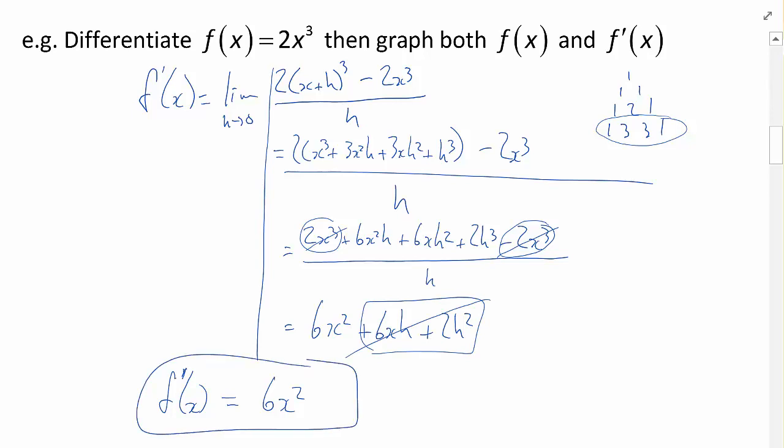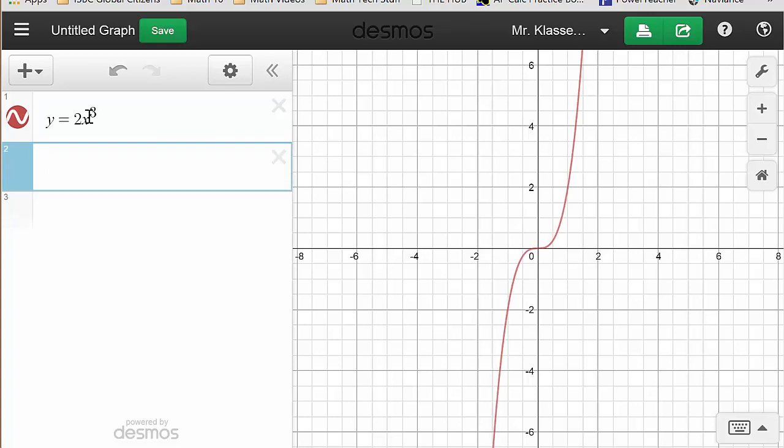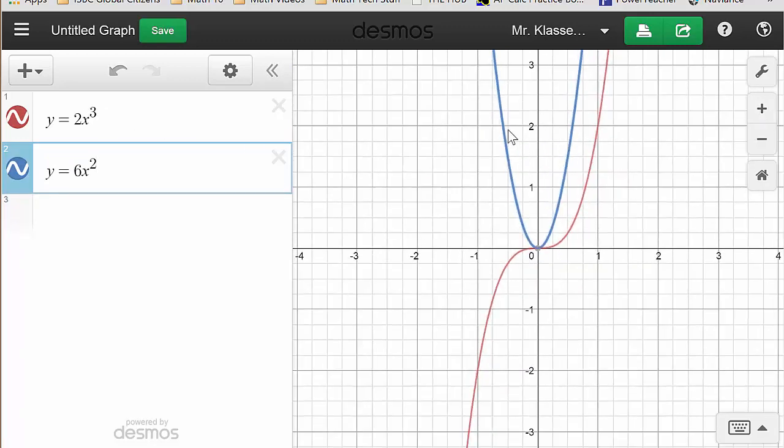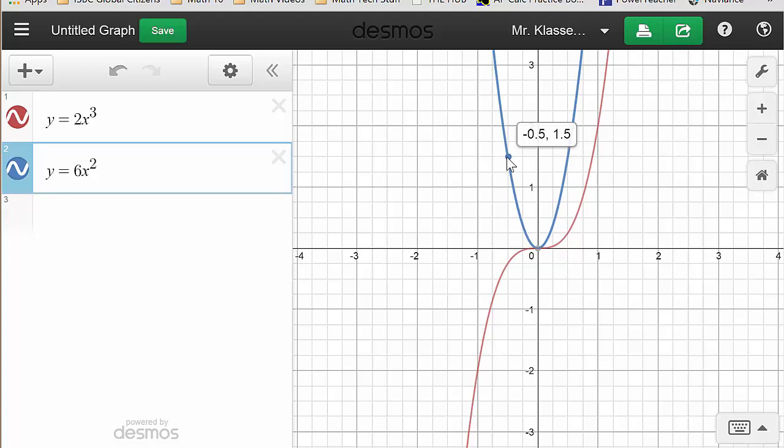Now let's look at graphing both of these. The original function was y equals 2x to the power of 3. There it is. And then the derivative function we said is y equals 6x squared. And what's important to note here with these two functions is that any point on this function here, say negative 0.5, 1.5, that y value is the slope here at negative 0.5. If you found the slope right there at that point, it is 1.5.